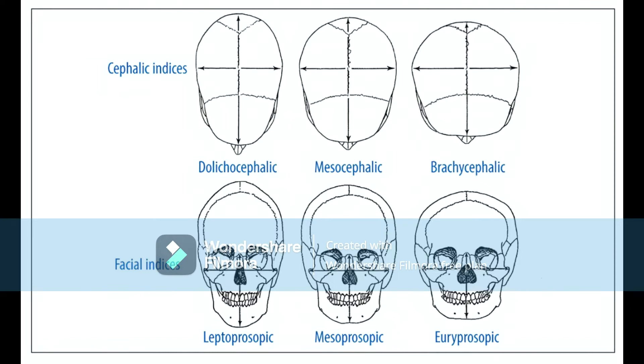There's also another measurement called facial indices. Leptoprosopy is a tall face, euryprosopy is a short wide face, and mesoprosopy is in the middle. I'll go through the different types with regards to cephalic indices and may mention some facial indices as well, but I'm going to focus primarily on skull length and width.